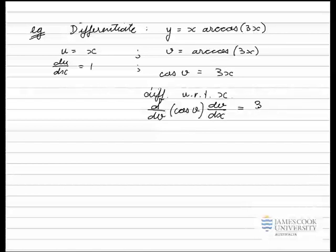This first derivative, derivative of cos v with respect to v - derivative of cos is negative sine, so negative sine v times dv/dx, we don't know what that is at this stage, but that's what we want. We want that dv/dx as part of our product rule. That's equal to 3.